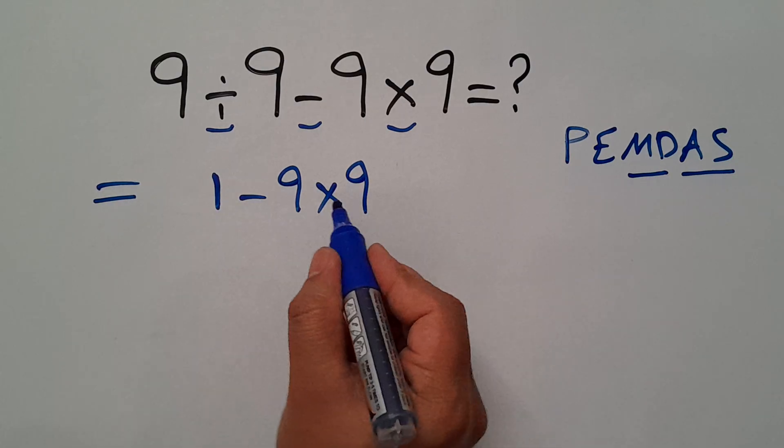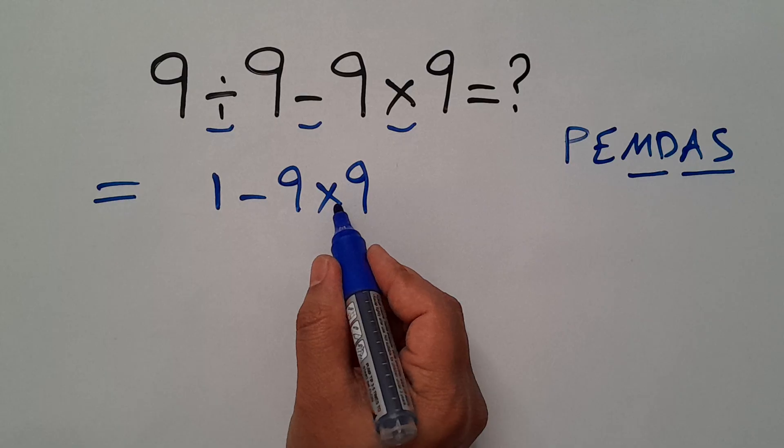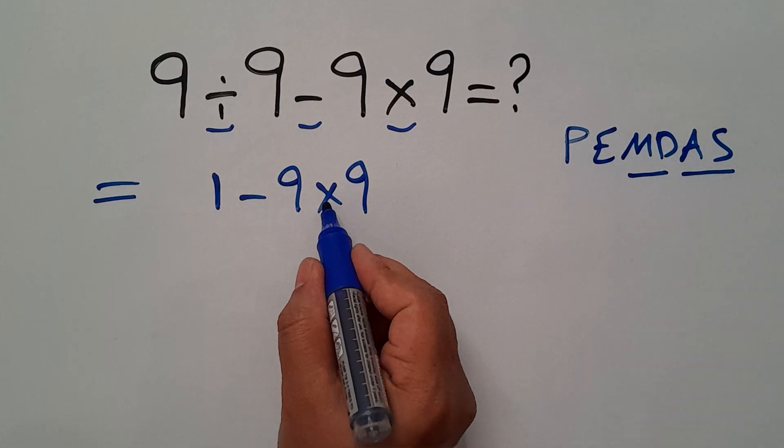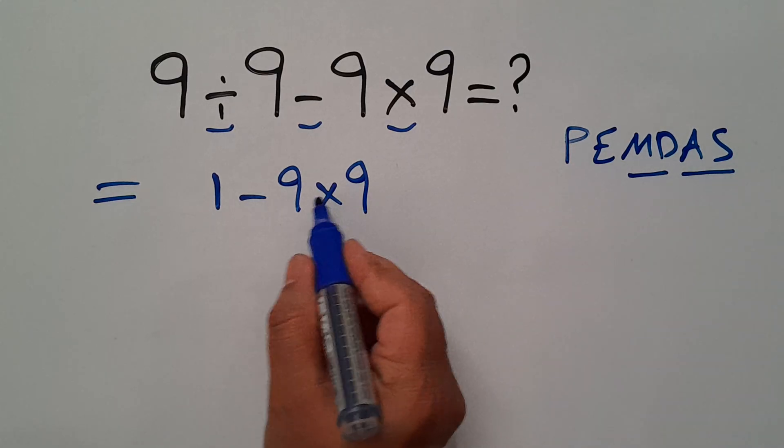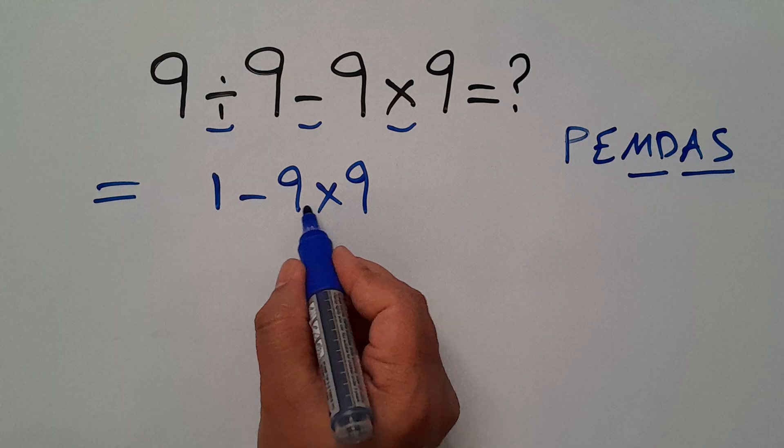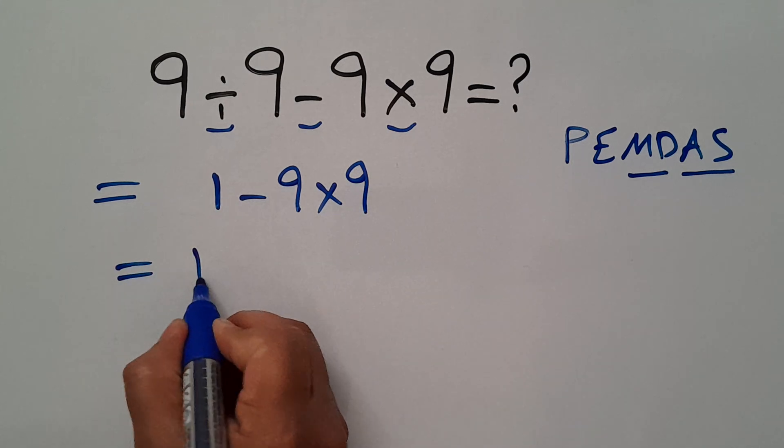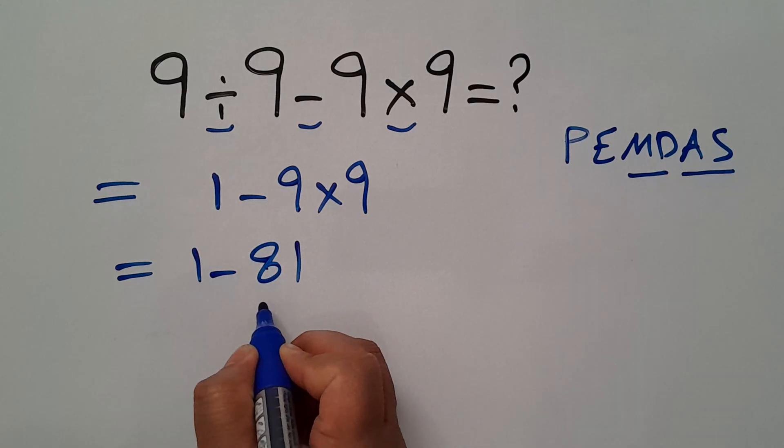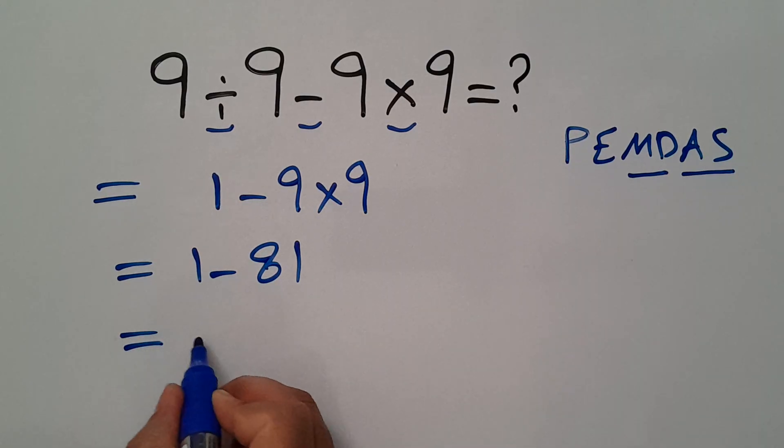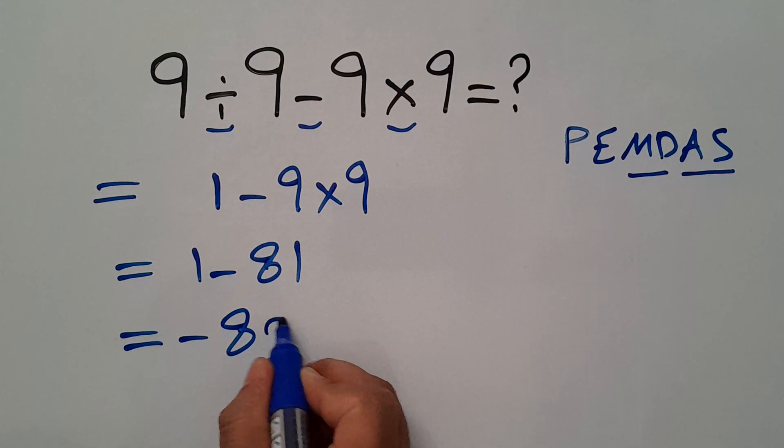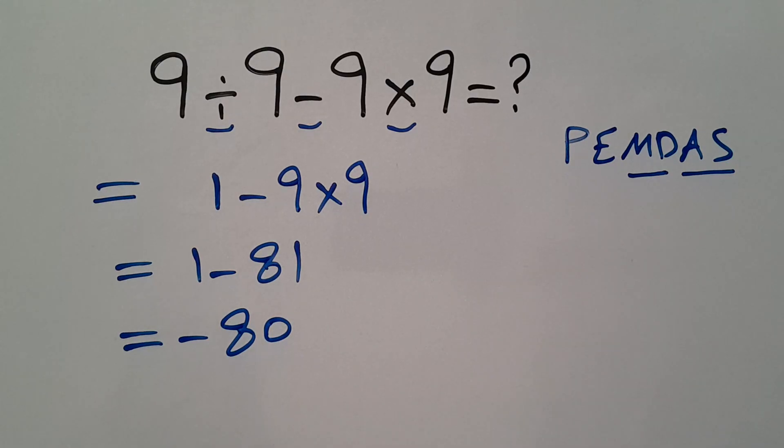In this expression we have one subtraction and one multiplication. According to PEMDAS, multiplication has higher priority than subtraction, so first 9 times 9 which equals 81. So 1 minus 81, and this is equal to negative 80.